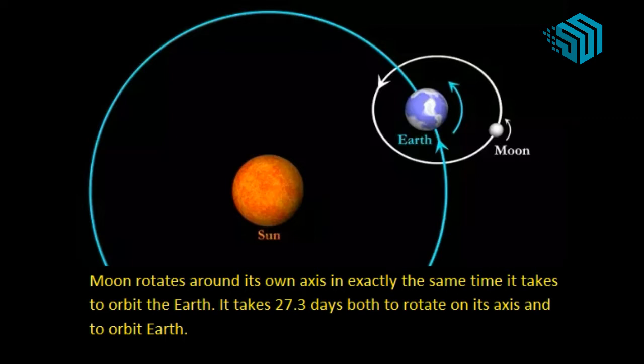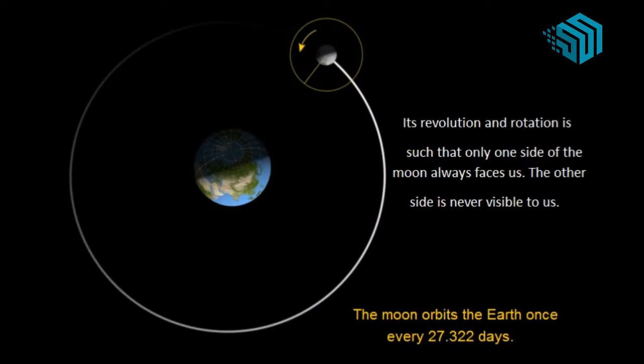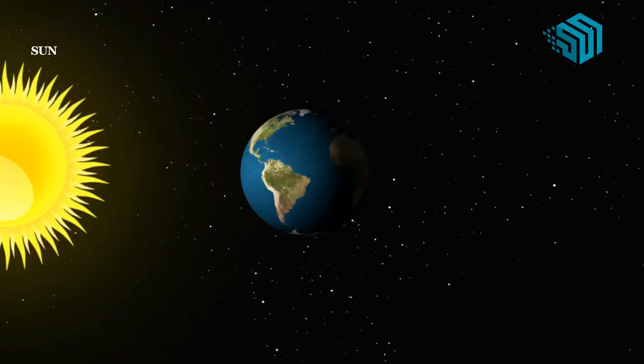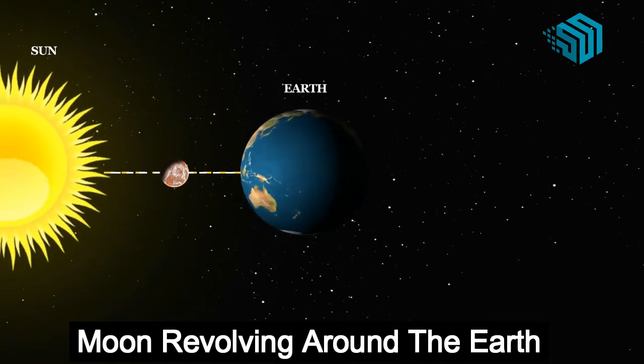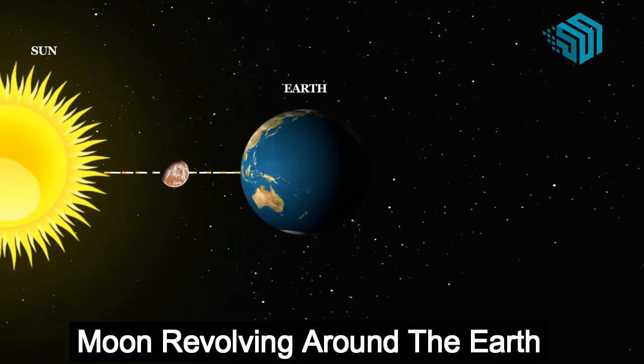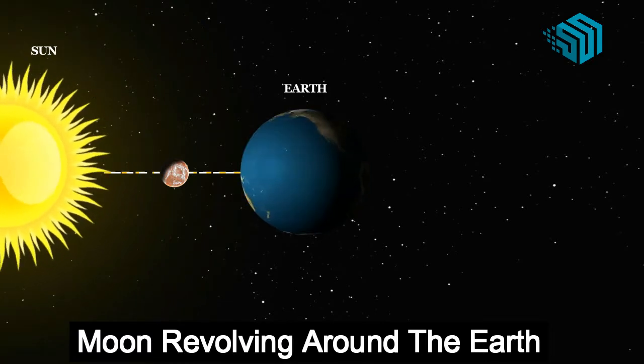Its revolution and rotation is such that one side of the moon always faces us, the other side is never visible to us. If you look at the sky you will notice that the shape of the moon changes each night. These different views are called faces of the moon.